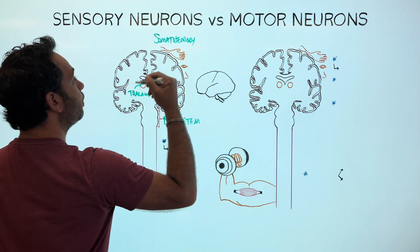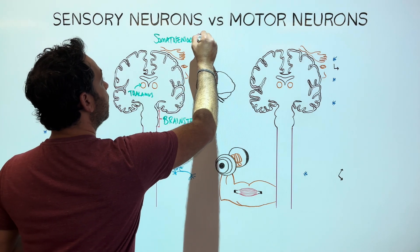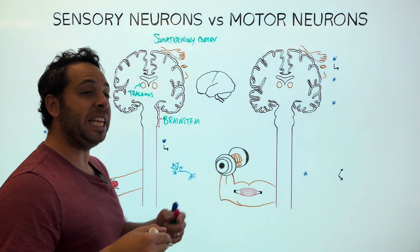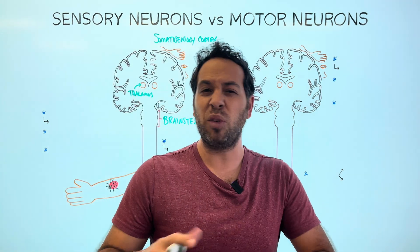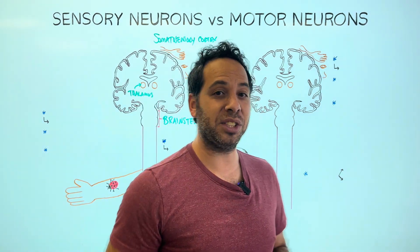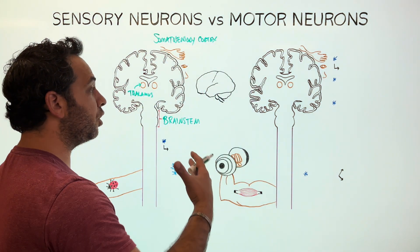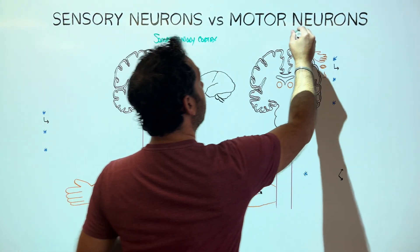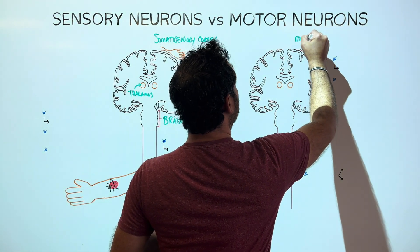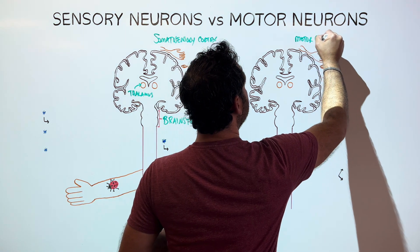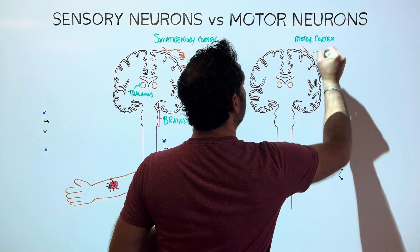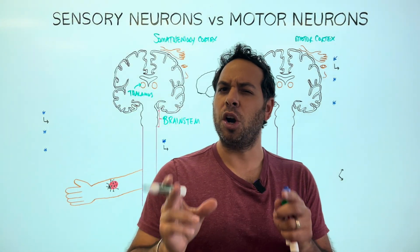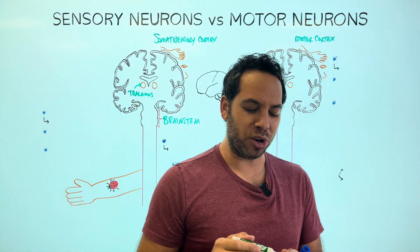The primary somatosensory cortex is the region of the brain that receives information from our skin — cold, hot — to make sense of the world around us. While motor neurons travel away to our muscles and glands from what we call the primary motor cortex. As we talk about these structures, we'll come back to them and how they deal with sensory and motor neurons.